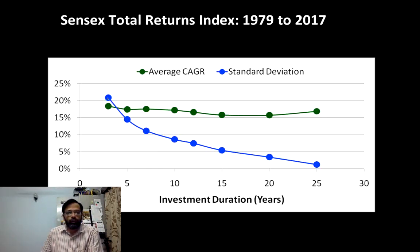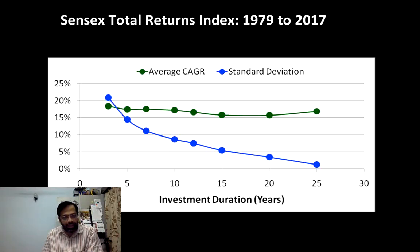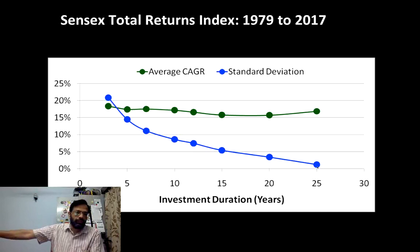Look at the standard deviation now. For the three-year period, the standard deviation is higher than the average — it's like saying the return will be 17% plus or minus 22% or something like that, which makes no sense. For the five-year period, again it is like 17% plus or minus almost 15% — again it makes no sense. But notice: as the duration keeps increasing, the standard deviation falls below the average and keeps falling — going down to 1%, 2%, 3% or so over the long term.